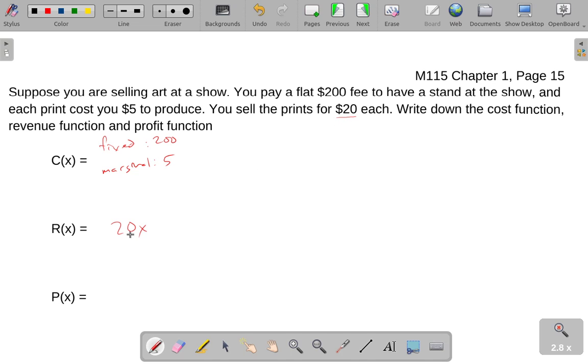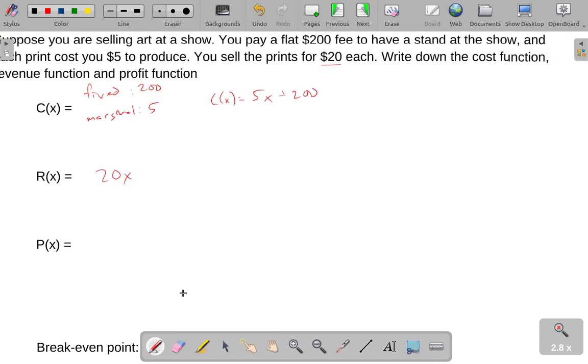You're selling these for $20 each, so 20 times the number of prints you sell. Let's go back to cost though. Cost C(x) equals, well your marginal cost is $5, so it's going to be 5 times the number of prints plus 200. That's your total cost.